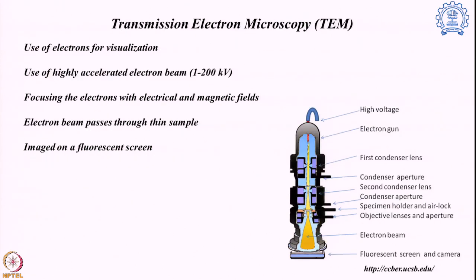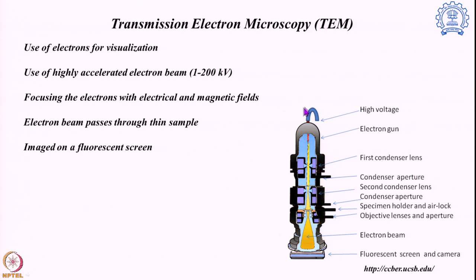Let us start with transmission electron microscopy. This is the schematic diagram of the system. In transmission electron microscopy we use electrons as our visualizing aid — not only electrons, but highly energetic electrons with energy in the range of 1 to 200 kilovolts, which are created outside and then bombarded through the system via an electron gun.